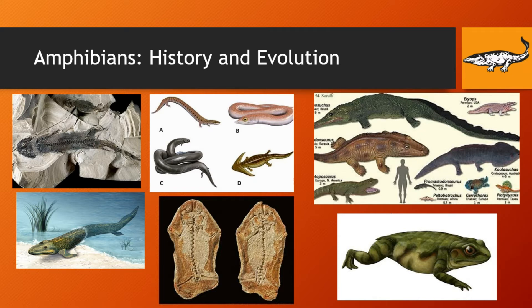One of the earliest species of amphibian or tetrapods was called Acanthostega, whose fossil and an artist's reconstruction can be seen here. The fossil record showed that this creature still did have gills, like a fish, but did have four distinct limbs, which showed the evolution from fish into amphibian.